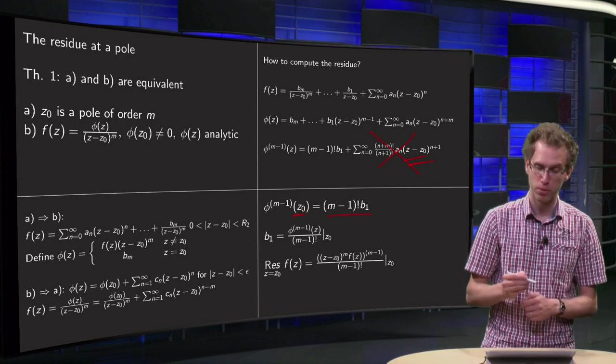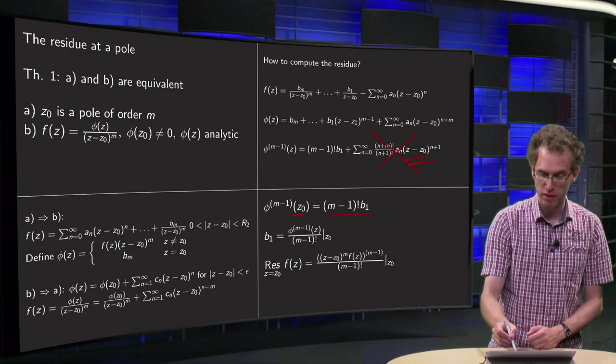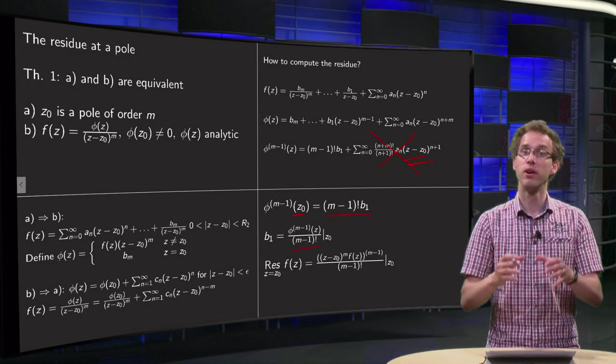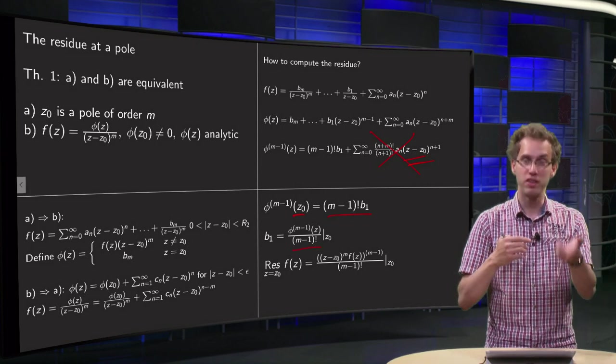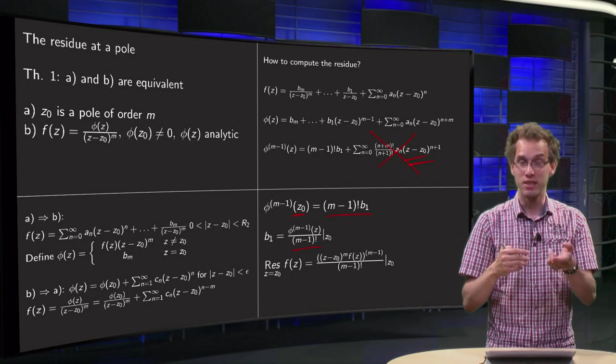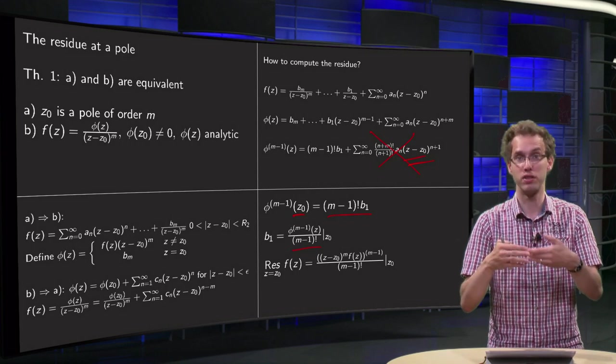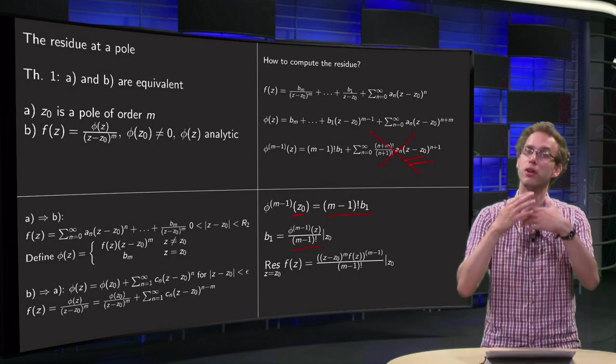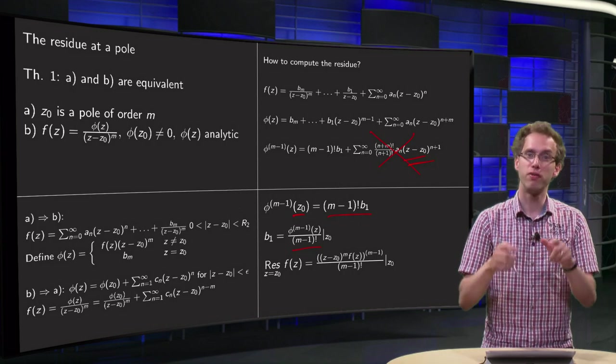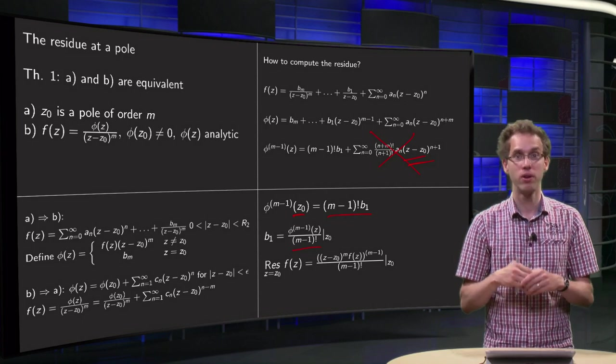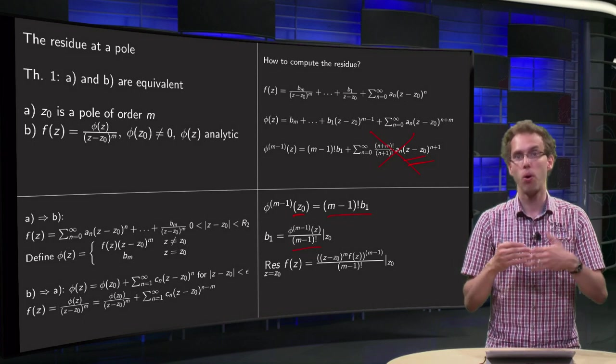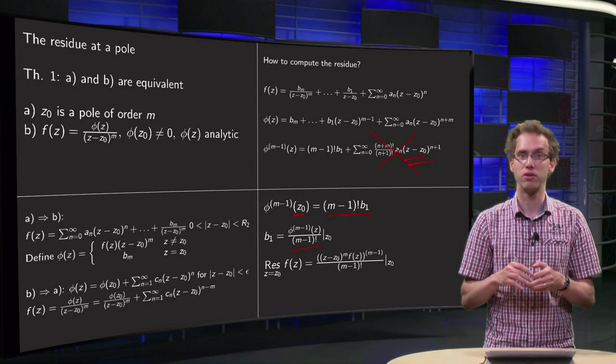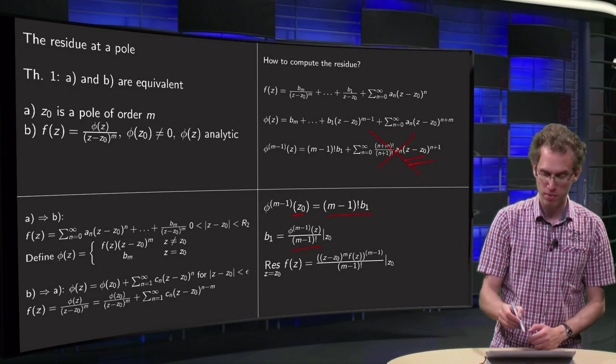And you can solve for your b1. How do you find your b1? Well, here it is, you have your φ, you differentiate it m-1 times. So sometimes you have to differentiate it 3 times, 4 times, you have your φ, you differentiate it a few times, you plug in z0, divide by (m-1)! and there you have your b1, or if you want to write it without your φ.